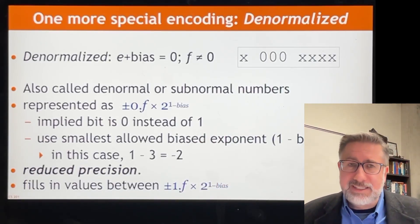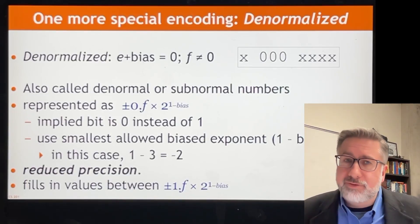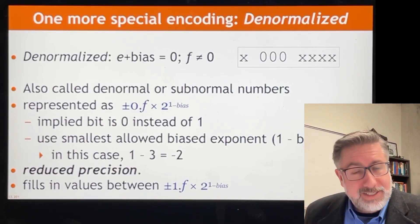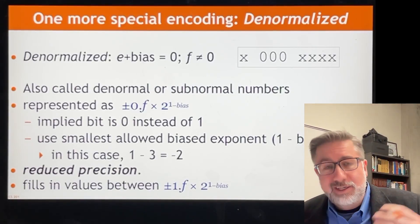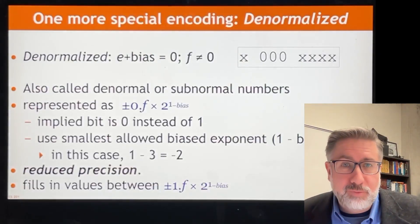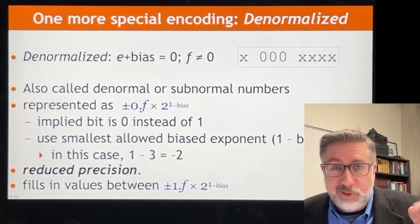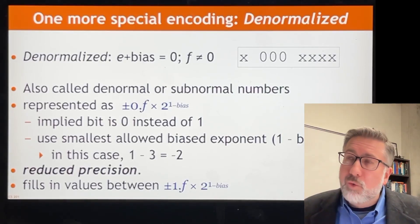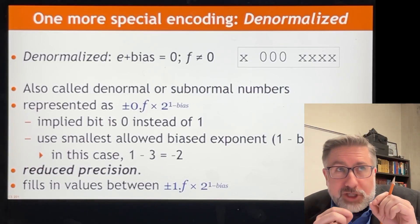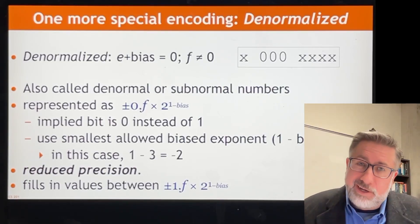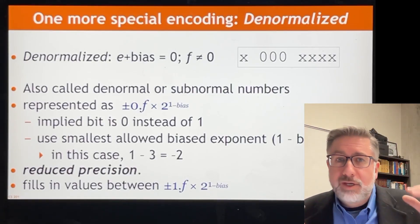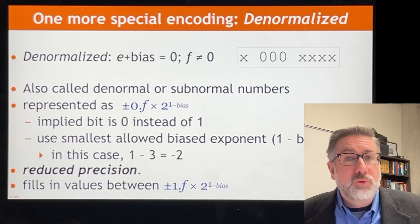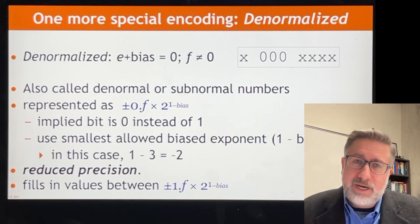The problem with that is two to the negative three is what we're talking about. 1.0 times two to the negative three would be a biased number that would be sort of next in line after the exponents negative two, negative one, whatever. But these are not one point something — these are zero point something. So it's zero point something times two to the negative three, which means if we were to shift that zero by one, if it was 0.1 times two to the negative three, that's 1.0 times two to the negative two.